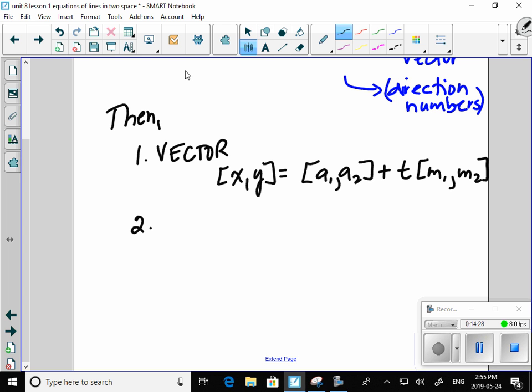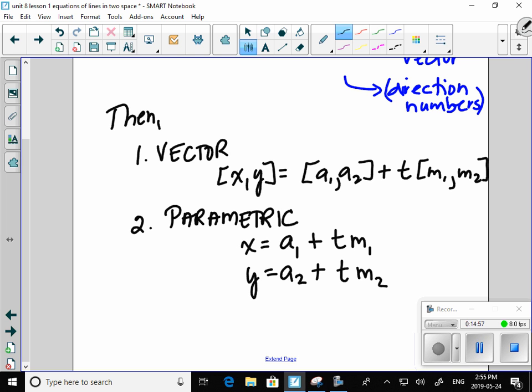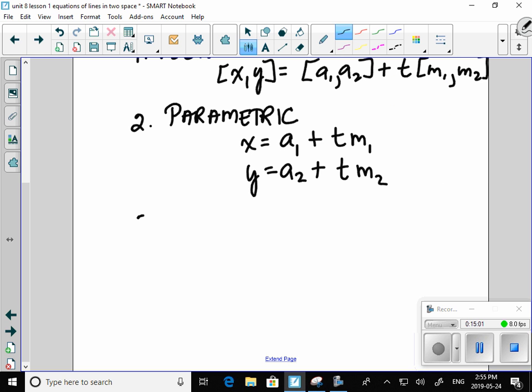The second form is parametric. Where we just separate the x and the y. So, I have the x value of the point. Plus a multiple of the first direction number. I have the y component of the point. Plus that same scalar multiple of my second direction number. Third form is symmetric. Where it looks like ratios. I have x subtract the x component of the point over my first direction number. y subtract the y component of the point over my second direction number.